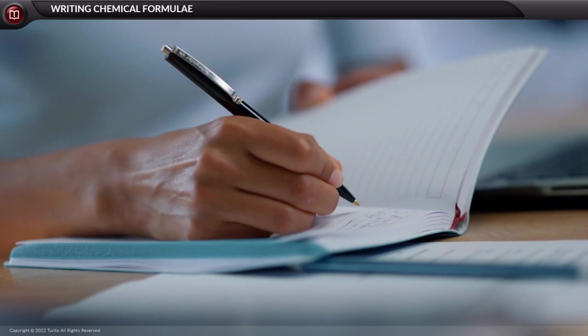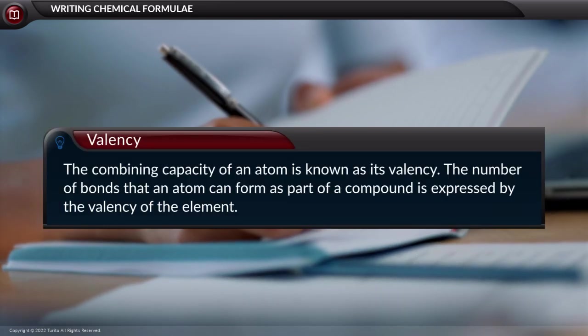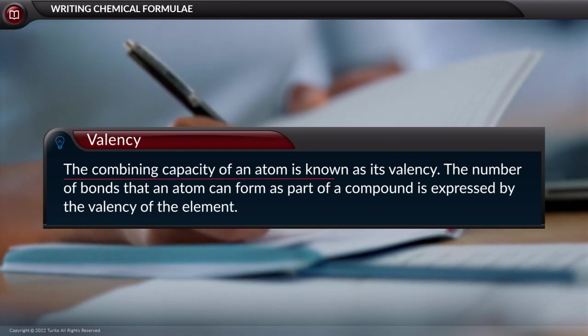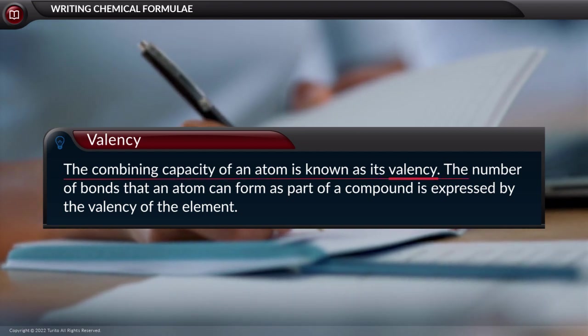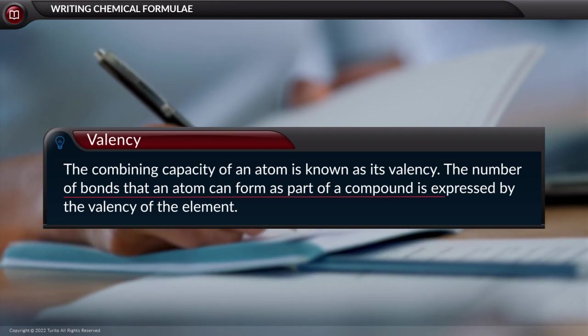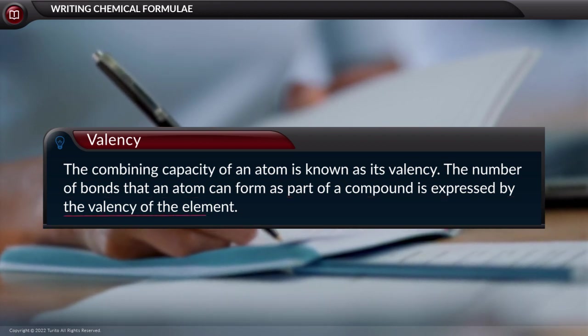To write the chemical representation, the first step is knowing the valency. The combining capacity of an atom is known as its valency. The number of bonds that an atom can form as part of a compound is expressed by the valency of the element.